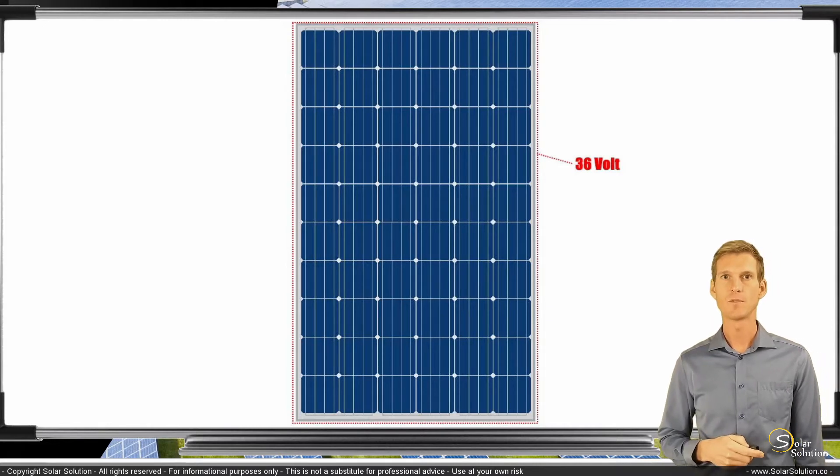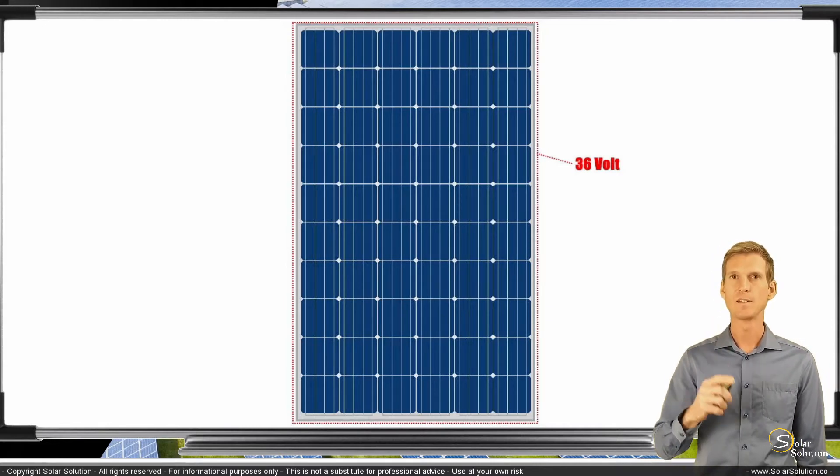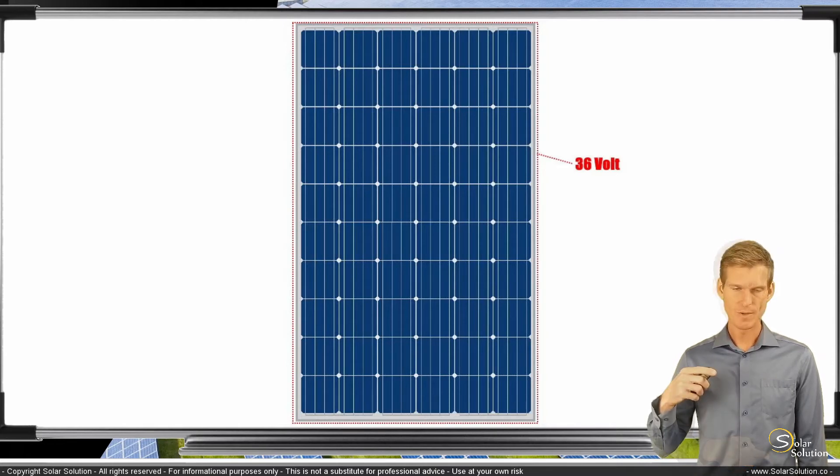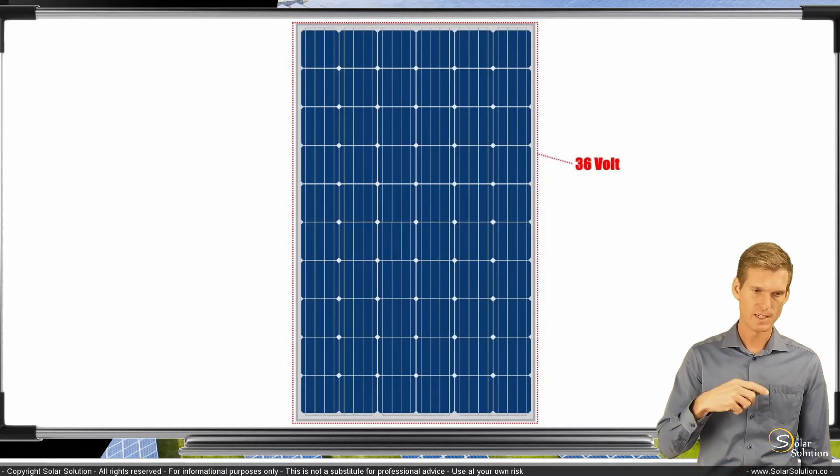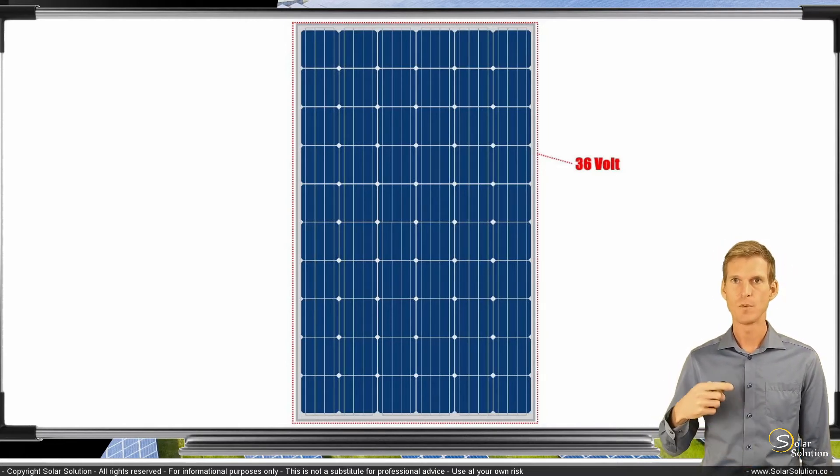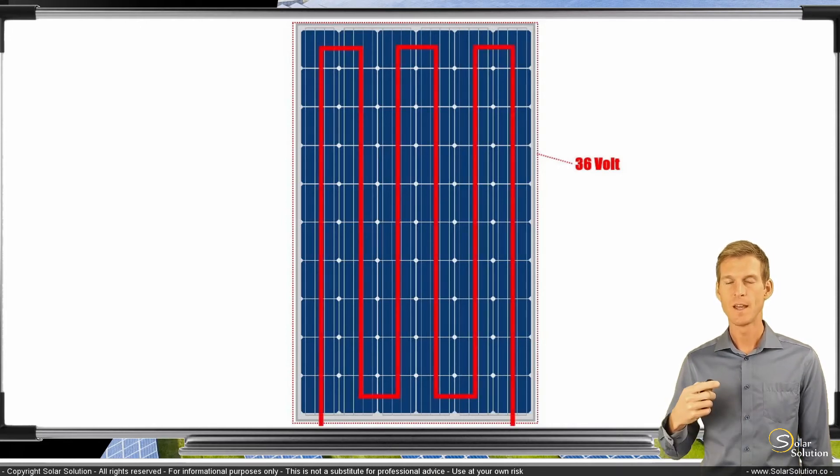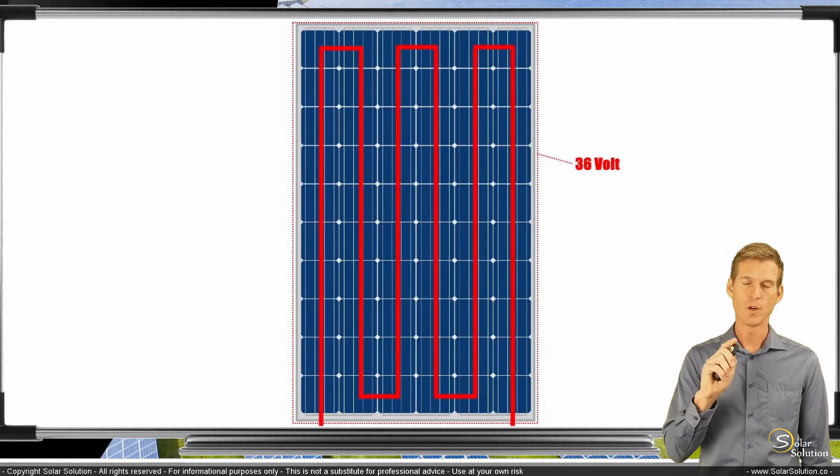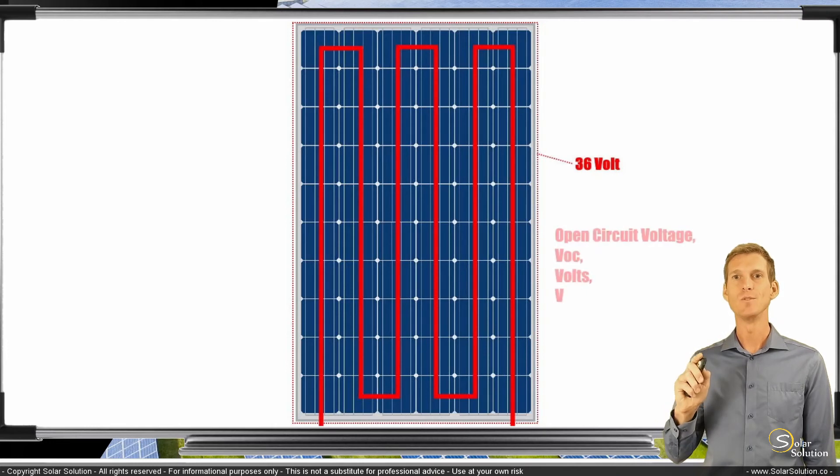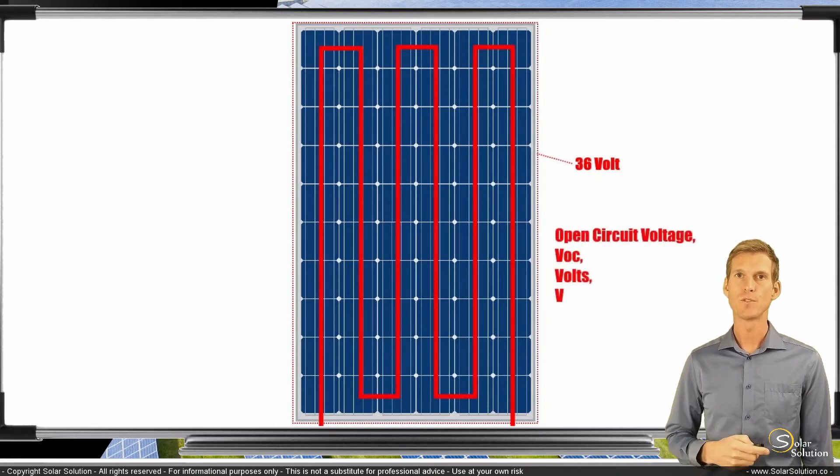But a 60 cell photovoltaic module will have an open circuit voltage of somewhere around 36. Most of the times nowadays, it's quite a bit higher. It can go up to 38, 40 volts. So in a photovoltaic module where everything is connected in series, we have an open circuit voltage of 36. And we also refer to the open circuit voltage with the term VOC with the unit of volts or V.